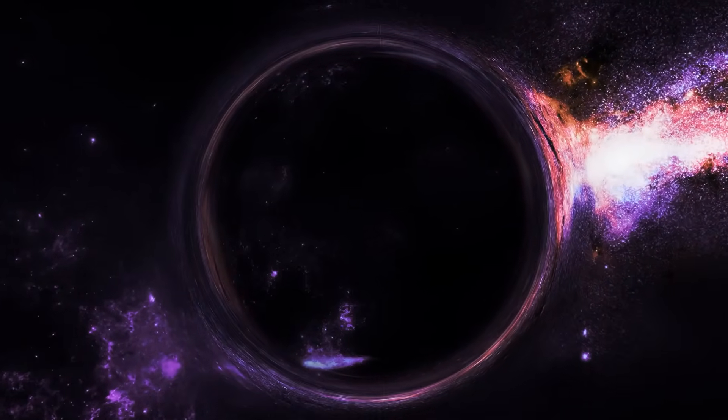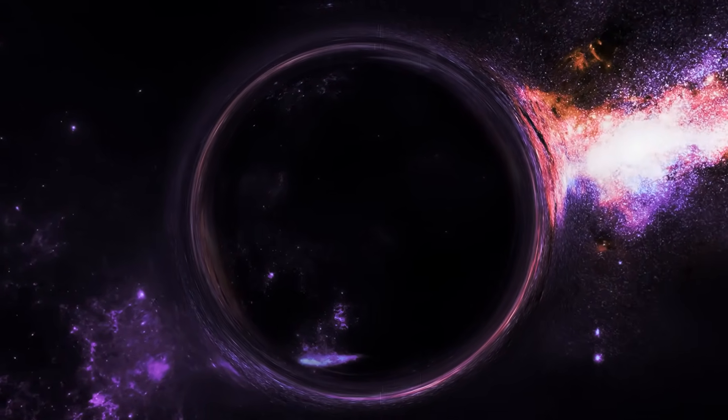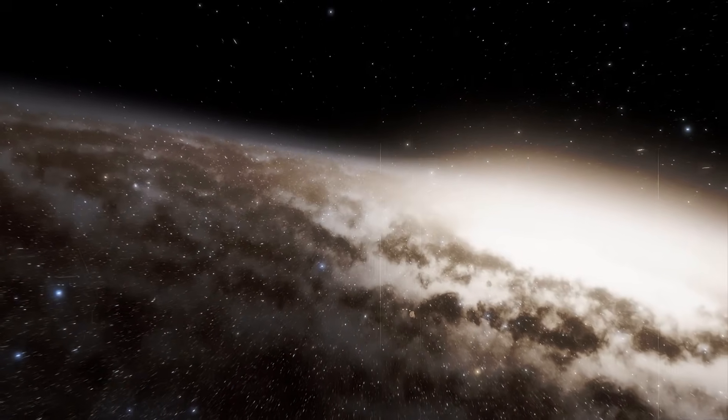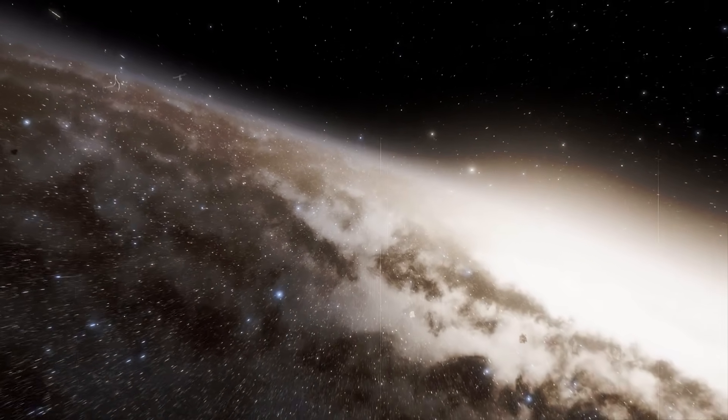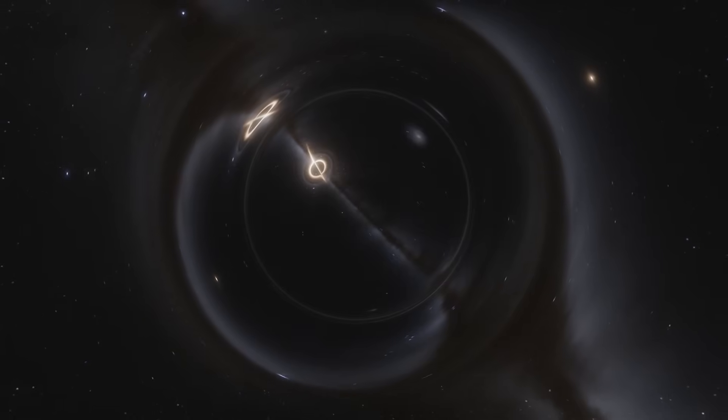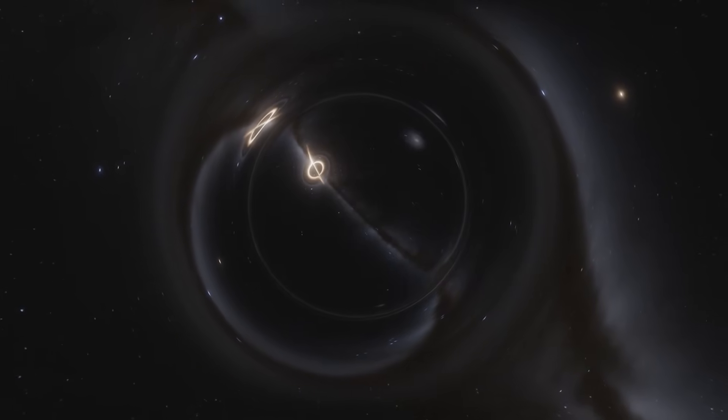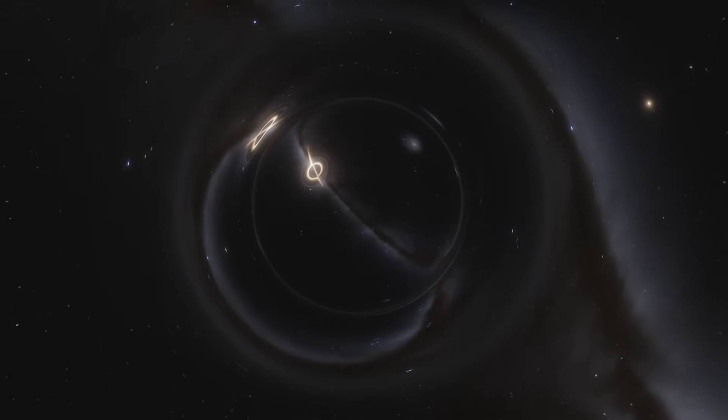Scientists claim that tiny black holes have been flying through space since the beginning of creation and are present almost everywhere - here on Earth, between planets, between stars and galaxies. Only, these black holes are so tiny that we have overlooked them so far.